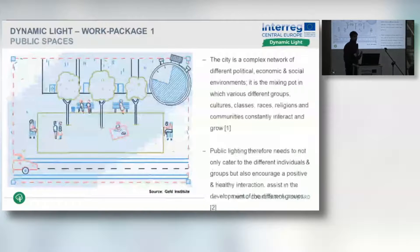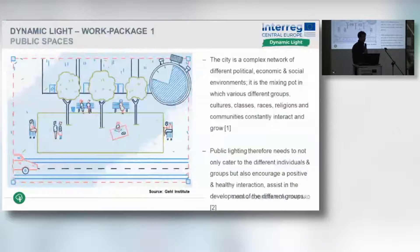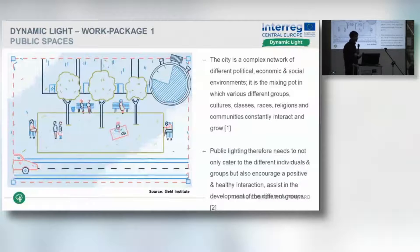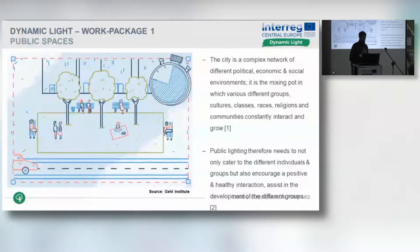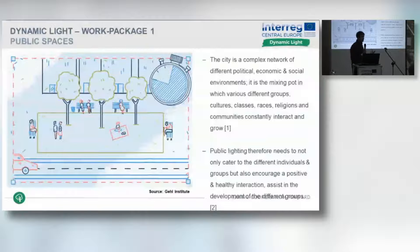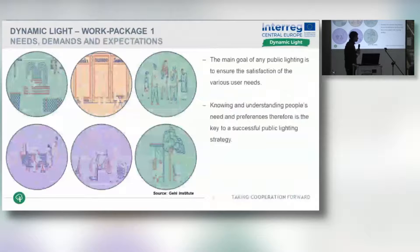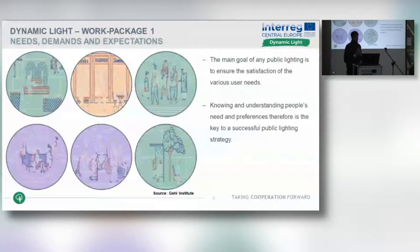In order to do this, we first need to understand what public spaces are. We went through a lot of research and urban design theories, and found that cities are a complex network of different political, social, and economical environments — a mixing point of different cultures, religions, races, people, and classes. Public lighting therefore needs to not only cater to these different individuals and groups, but also help these groups interact and develop. The main goal of any public lighting is to ensure the satisfaction of the various user needs.